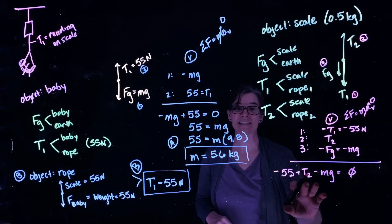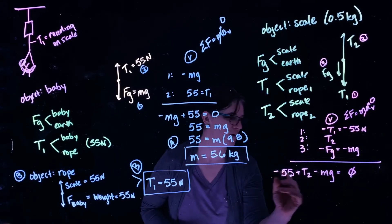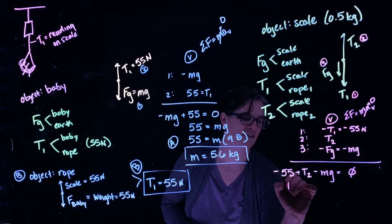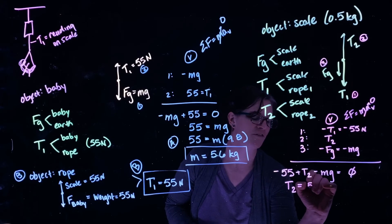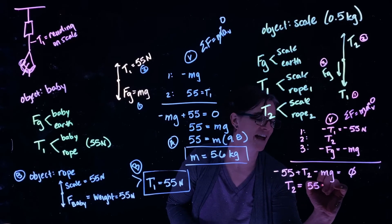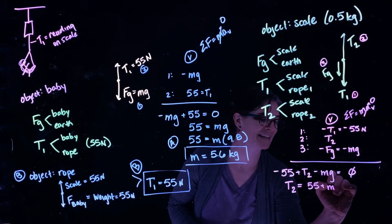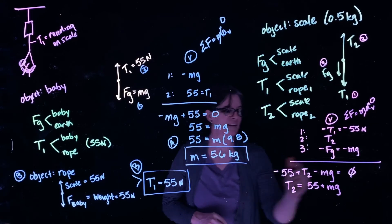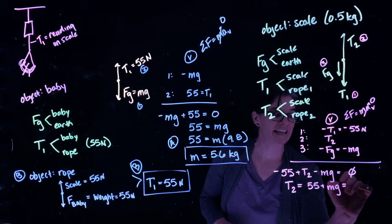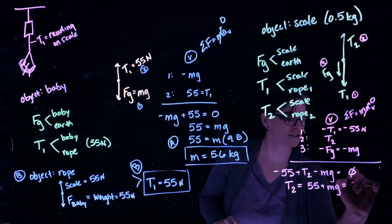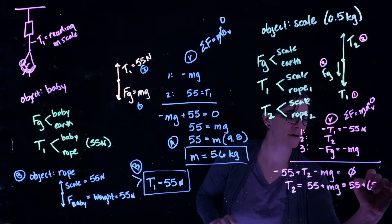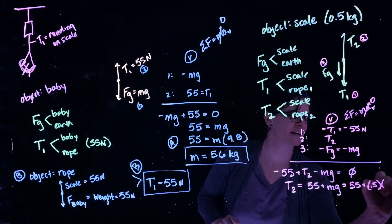Solving for T2: bringing the other terms to the other side gives T2 equals 55 plus mg, where that's the mass of the scale. So we have T2 equals 55 plus 0.5 times 9.8.